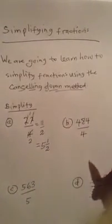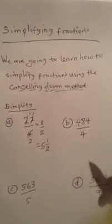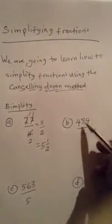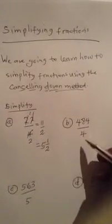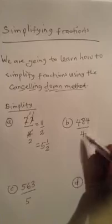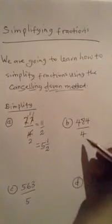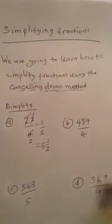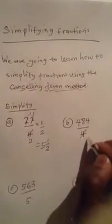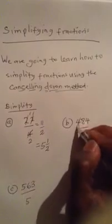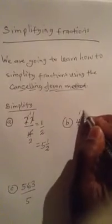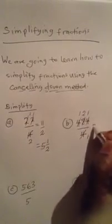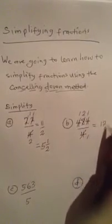The second one, we have 484 divided by 4. We can start by looking for one of the factors that goes into both. We could either use 4 straight away or begin with 2. In this case, 4 is easy to use. 4 into 4 is 1, 4 into 8 is 2, 4 into 4 is 1. Hence, our answer is 121.